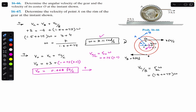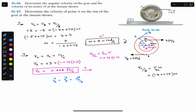For the velocity of A we use the relative velocity equation in vector form: V_A (vector) = V_B (vector) + V_A/B (vector). V_A will have two components: V_Ax in the positive x and V_Ay in the positive y direction. V_B is in the negative x only: minus 4i. The velocity of A relative to B can be written as omega cross the position vector r_A/B.